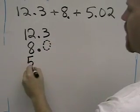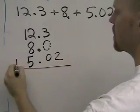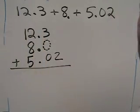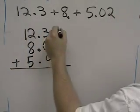And then finally, 5.02. And you can see that all the decimals are being lined up. And now I can add.